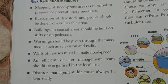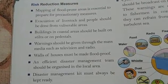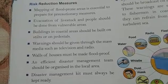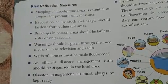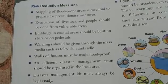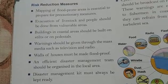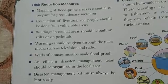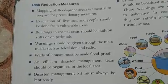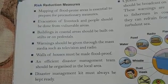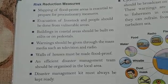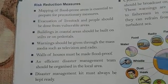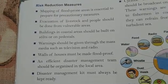Buildings in coastal areas should be built on stilts or on pedestals, and walls of houses must be made flood-proof. A disaster management kit must always be kept ready, which includes a first aid kit, food stock, fresh water, clothes, and other essential items such as candles, matchsticks, torches, and sticks to ward off snakes. An efficient disaster management team should be organized in the local area. By adapting such measures of flood preparedness, we can check the devastating effects of disasters.